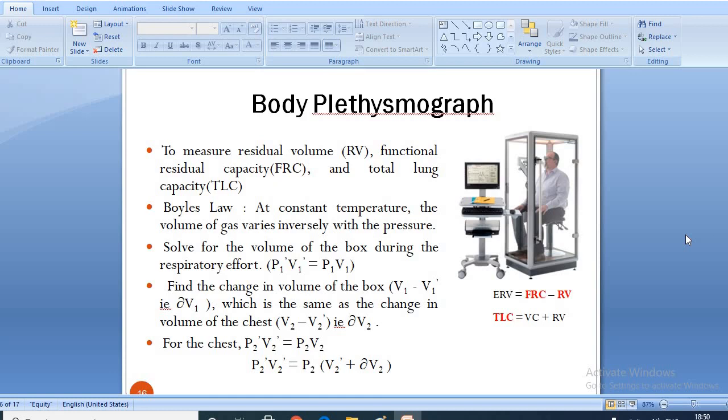At the end of the normal expiration, the mouthpiece is closed. The patient is then asked to make an inspiratory effort. As the patient tries to inhale, the lungs expand, decreasing pressure within the lungs and increasing lung volume. This in turn increases the pressure within the box since it is a closed system and the volume of the box compartment has decreased to accommodate the new volume of the subject.